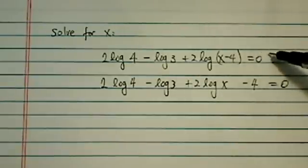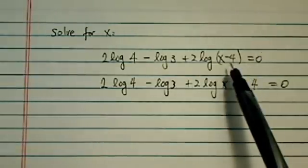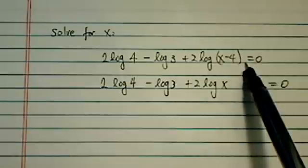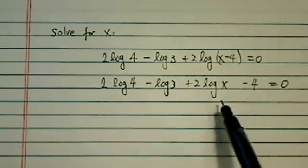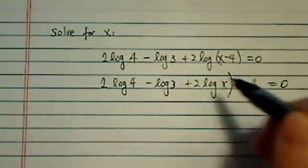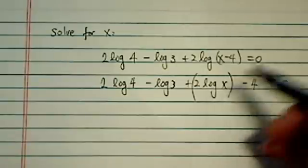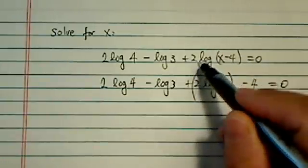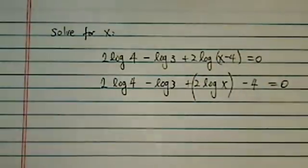We have very similar equations over here. Depending on where the parentheses here versus here, it makes a huge difference. Because for this one, 2 times log of x is by itself versus this one is 2 times log of x minus 4.